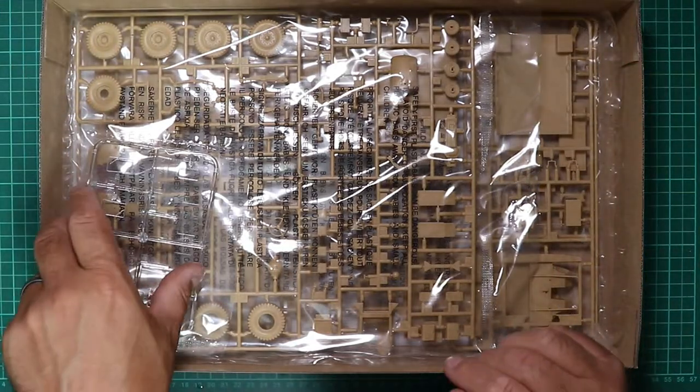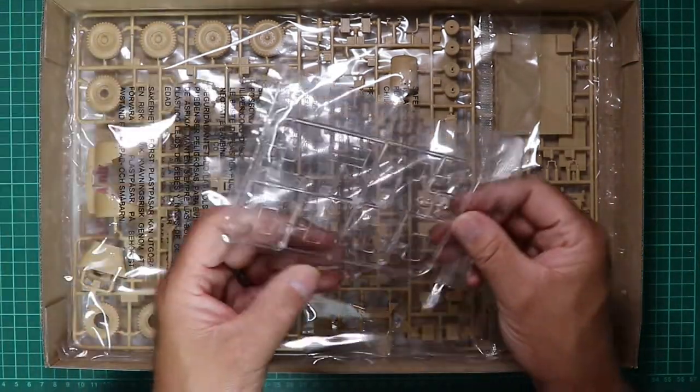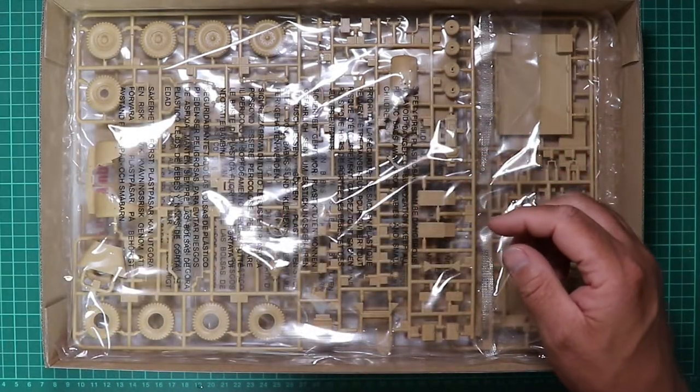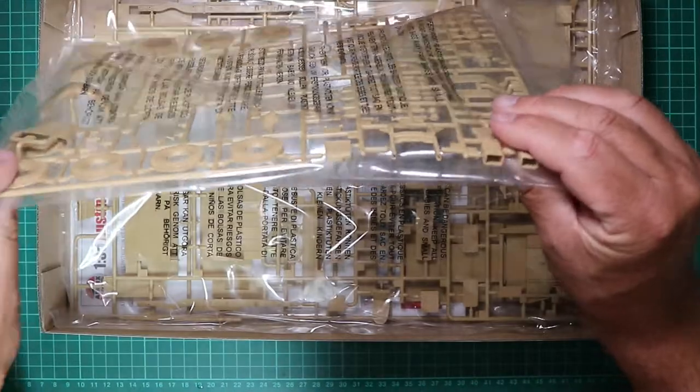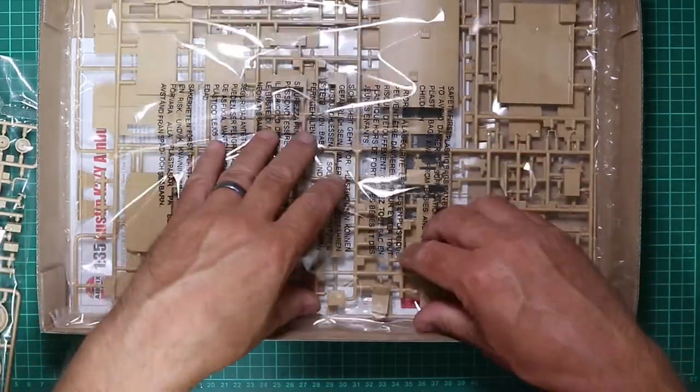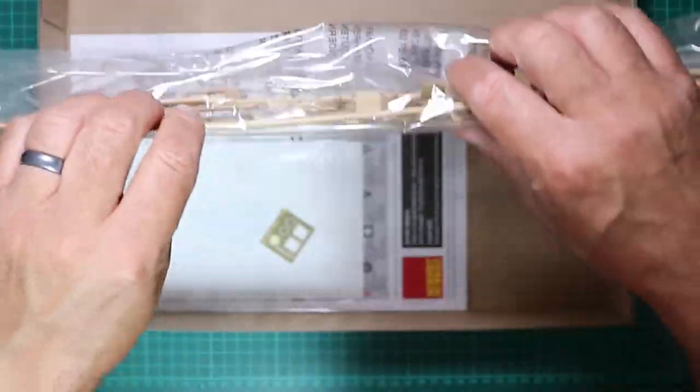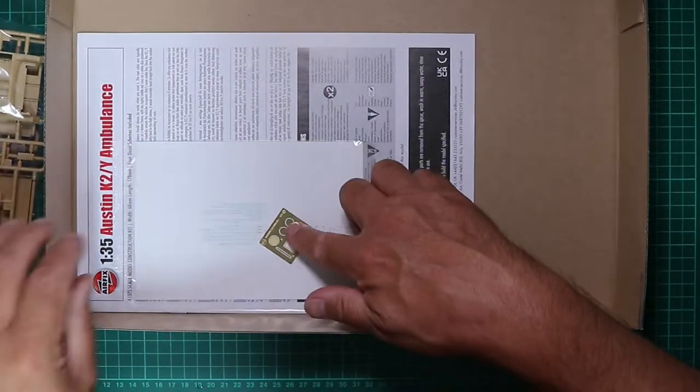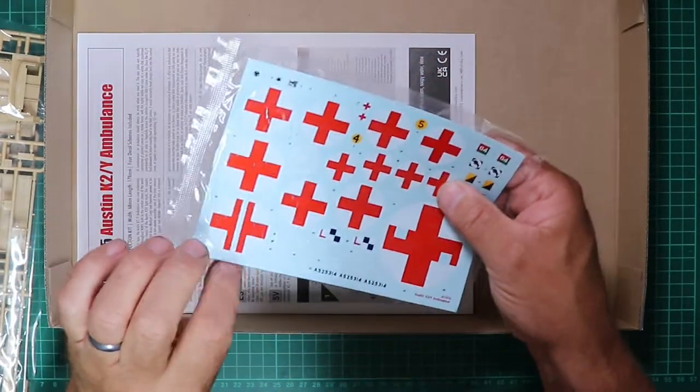Lifting the lid reveals the contents, all bagged separately which is a nice touch. We've got the clear windscreen parts, main sprues. Not too much in this kit - we've got three plastic sprues and a clear sprue, a little bit of photo etch, the decals and the instruction book.